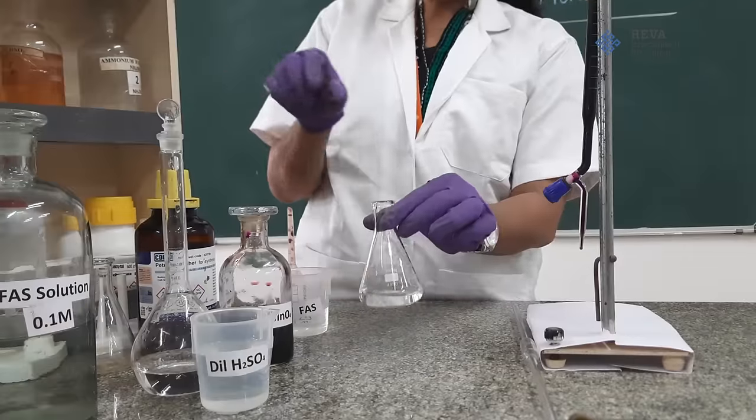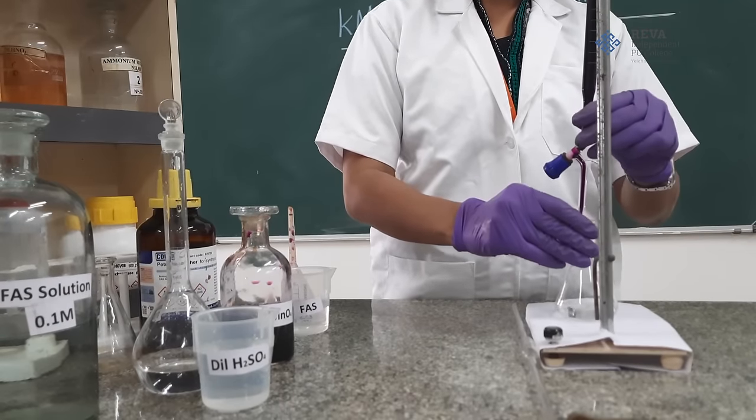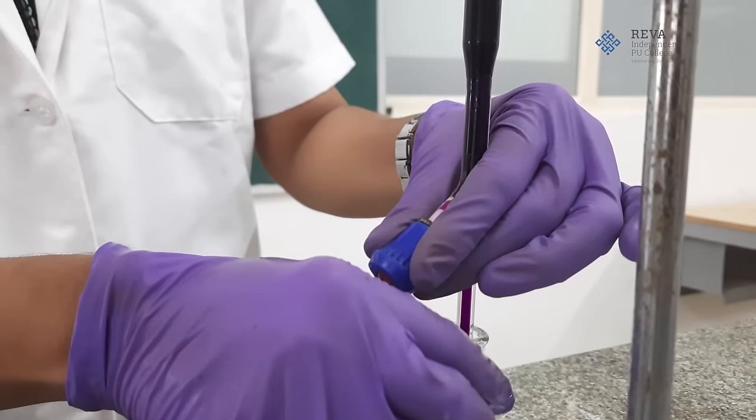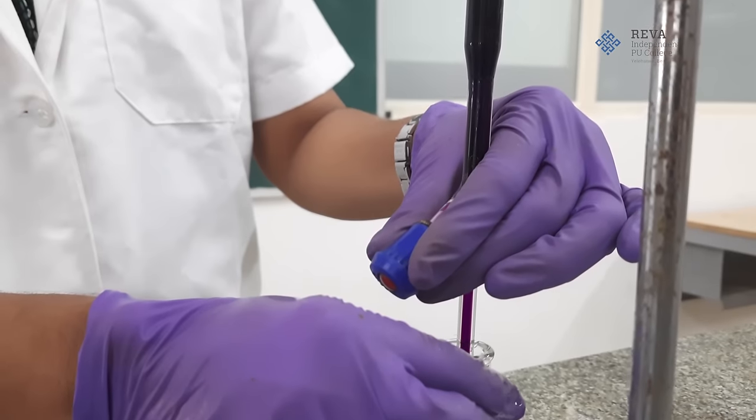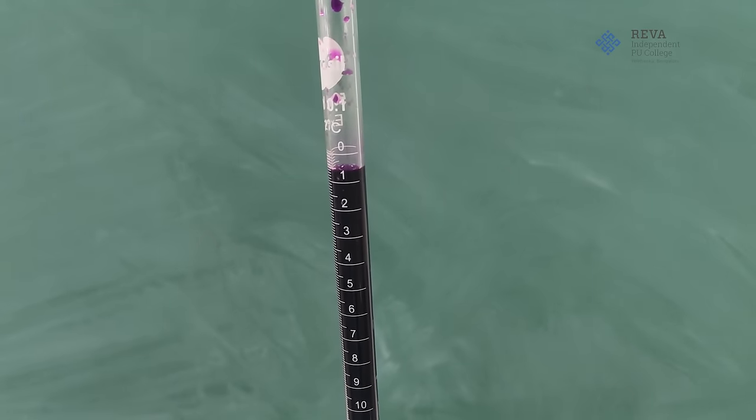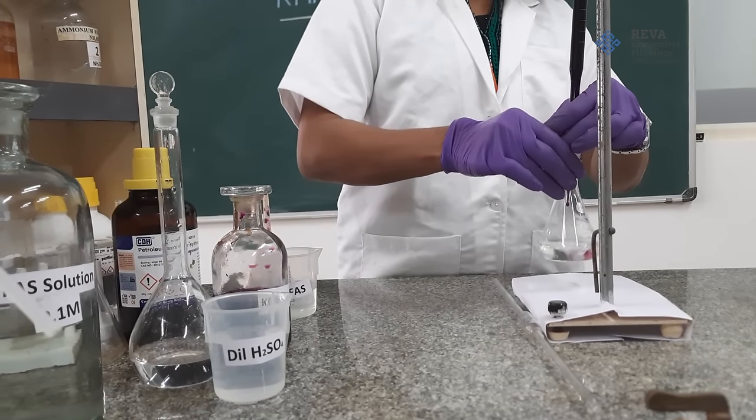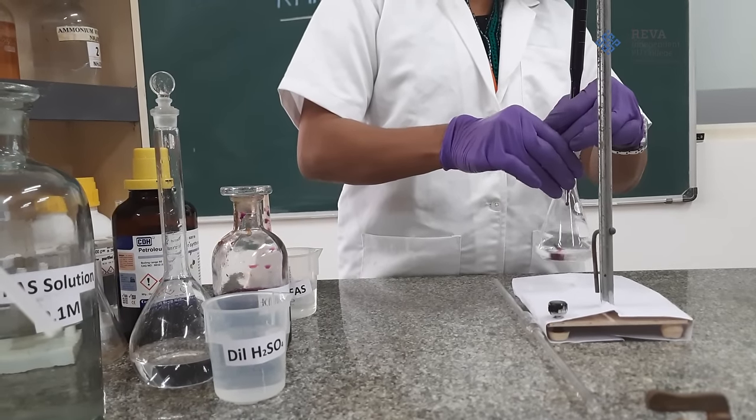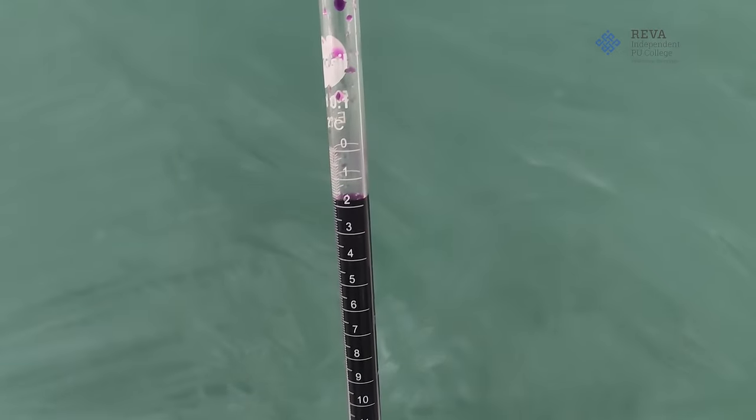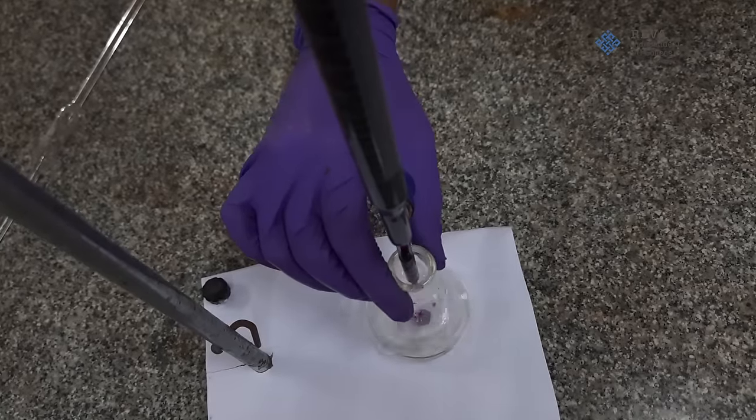Then while doing a titration, we should use a right hand for stirring the solution in conical flask and left hand is used to control the knob of a burette. Now we will run potassium permanganate solution from burette into conical flask containing ferrous ammonium sulfate solution and dilute sulfuric acid. Continue adding potassium permanganate into conical flask drop by drop with stirring.